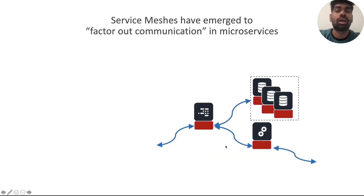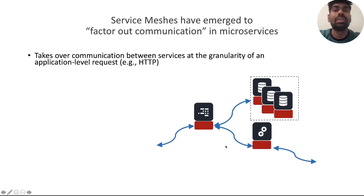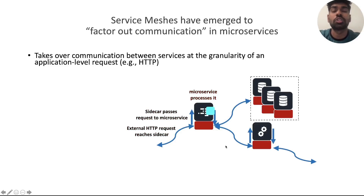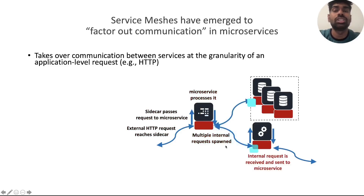This sidecar — the red box — routes traffic at the granularity of the HTTP-level request. As you can see in this animation, when an external HTTP request reaches the sidecar, it hands it over to its microservice which processes it and may issue many new internal requests to service it. This is the general communication pattern.